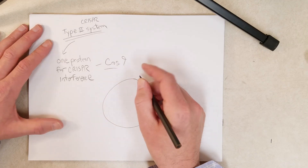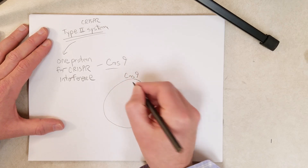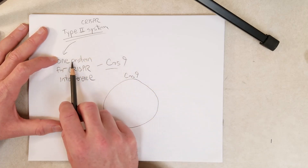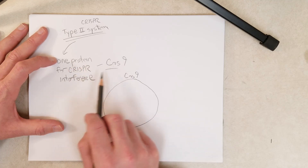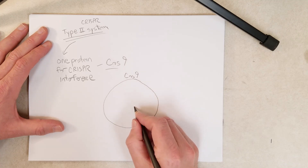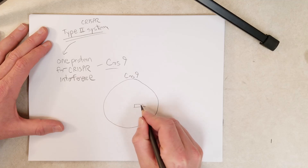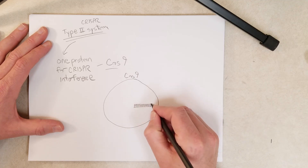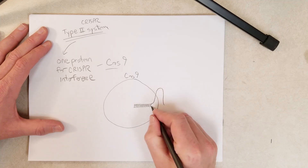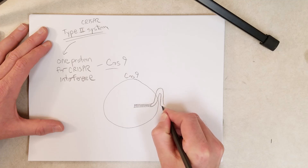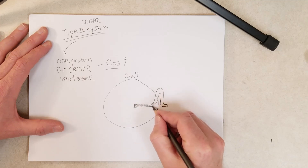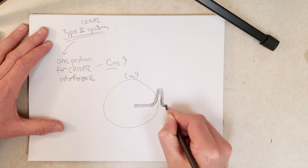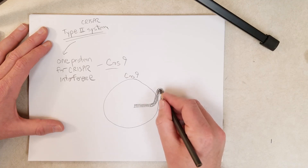Even though the Type 2 system is simpler in requiring only one protein for the interference step, it does need two short RNA molecules. The first one is not derived from the CRISPR array. These are short single-stranded RNA molecules, approximately 20 to 40 nucleotides long.